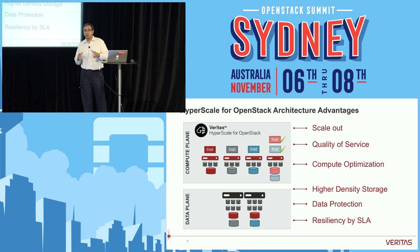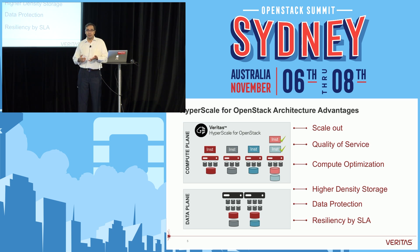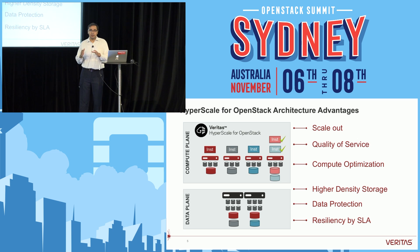Hyperscale also provides SLA-driven resiliency. For a particular workload, you can configure how many copies you want — for example, just one copy on the data node for a less critical workload. Similarly, on the compute node you can configure resiliency parameters. You can decide which workload is mission-critical and which is not, and choose resiliency settings appropriately.